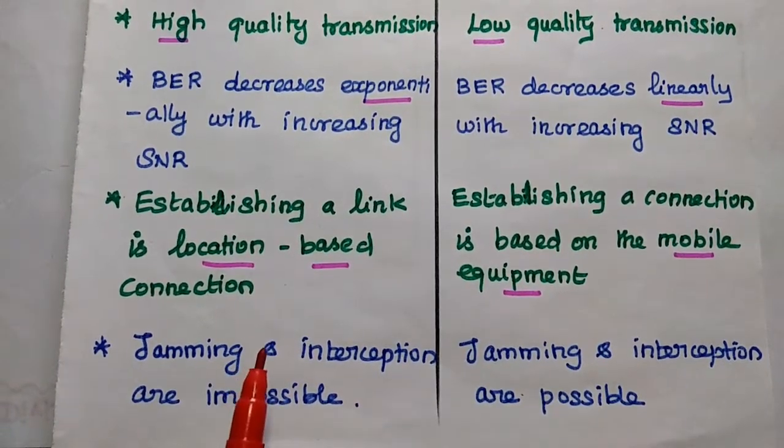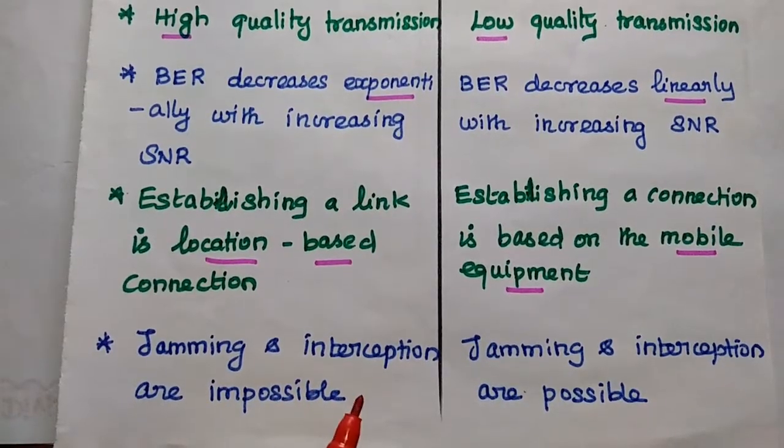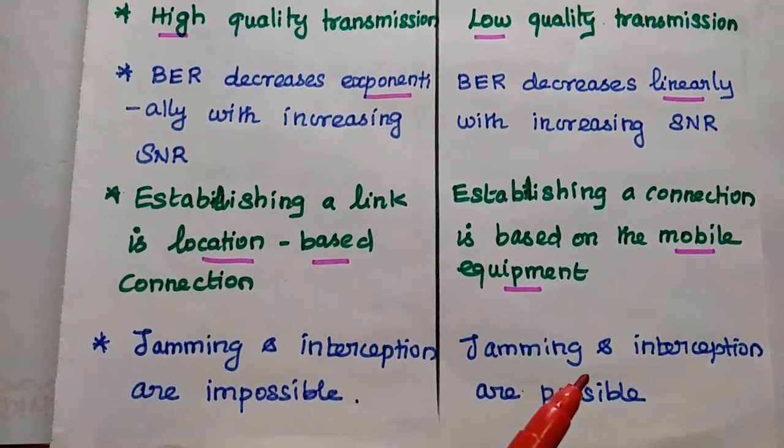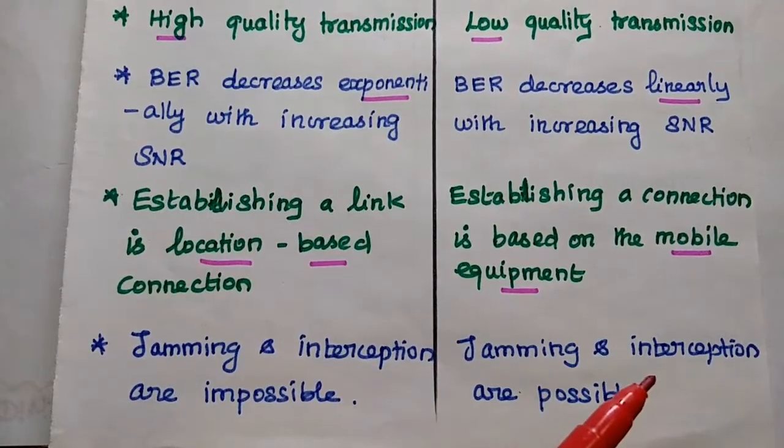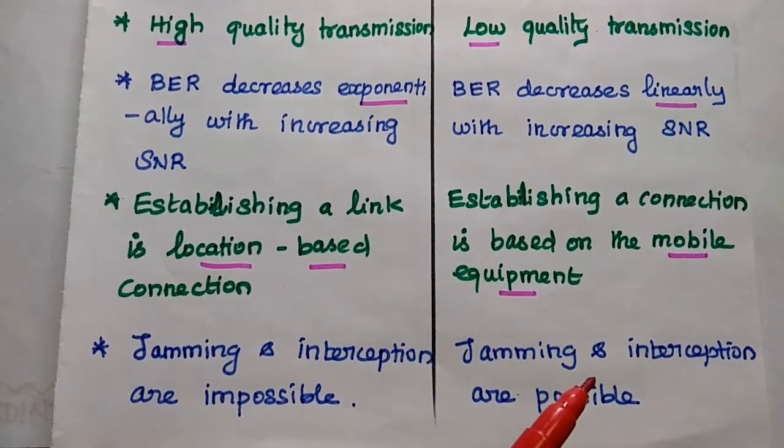In wired communication, jamming and interception both are not possible. But in wireless communication, jamming and interception both are possible.